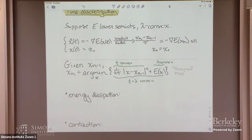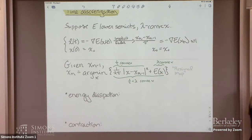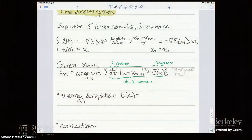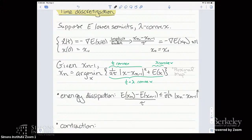This time discretization is fundamental to the gradient flow, and even at the discrete time level we preserve two key properties of the continuous time gradient flow. The first is energy dissipation — a direct consequence of x of n being the optimizer of the functional. Since x of n minimizes the functional, its value there is smaller than at x of n minus one, and rearranging gives the energy dissipation inequality. The energy is decreasing along the discretized scheme, just as it decreases in continuous time.